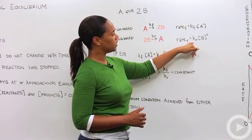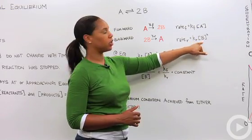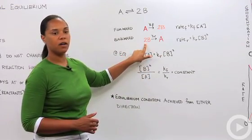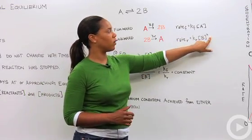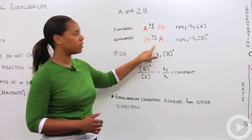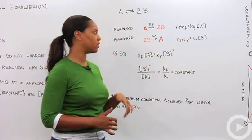Our rate would be rate sub r is equal to k sub r times the concentration of B squared, remembering that this coefficient in front means that you must square the concentration and if this happened to have been a three in front you would cube it and so forth.